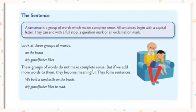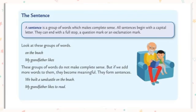Let us see here. 'We built a sandcastle on the beach.' We said 'on the beach' is not a sentence, so we added more words and now it becomes a meaningful sentence. 'My grandfather likes to read.' There is meaning in this sentence. That's why we say a sentence is a group of words that makes complete sense.